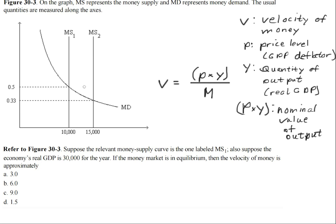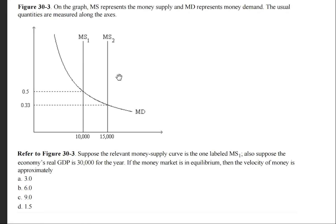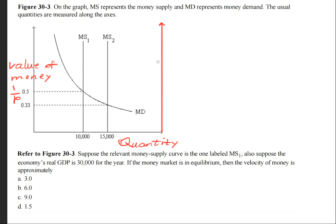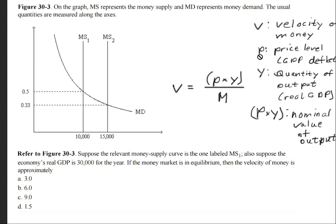What will really trick a lot of people is this variable right here. You might immediately jump to the equilibrium point and start plugging in the numbers. But what you'll fail to realize is that there are actually two axes — there's an invisible one that was not shown. This axis is the value of money, which is 1 over P. The x-axis is the quantity of money, and the secondary y-axis is actually the price level in terms of P. So if we were to have plugged in 0.5 for the P variable, we would have gotten the incorrect answer — that would lead to answer D, which is not right.